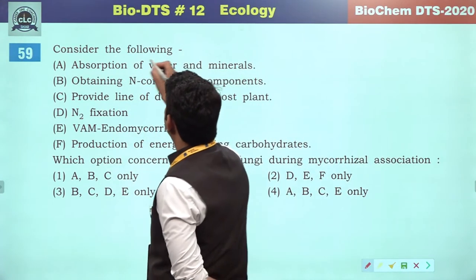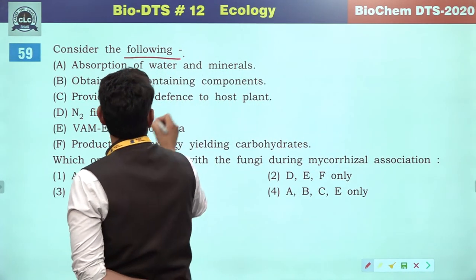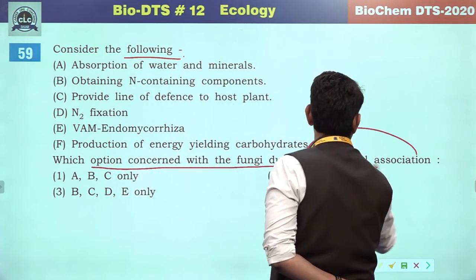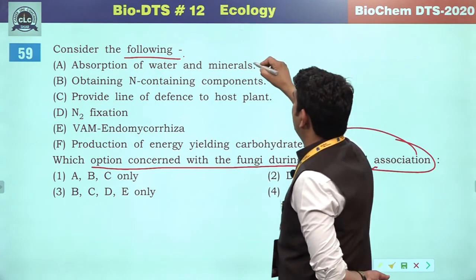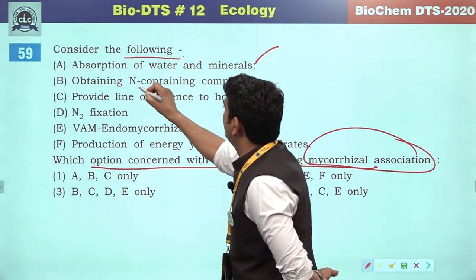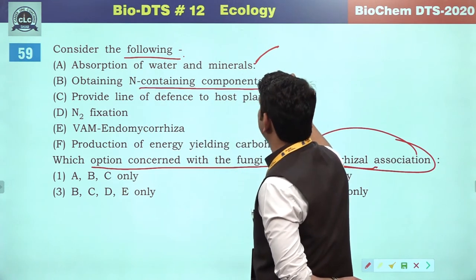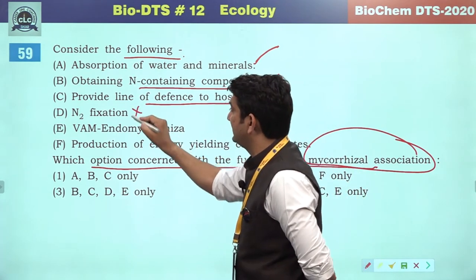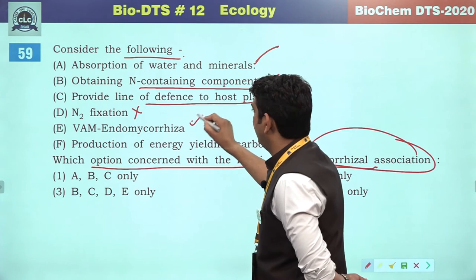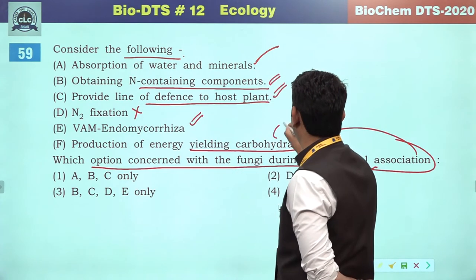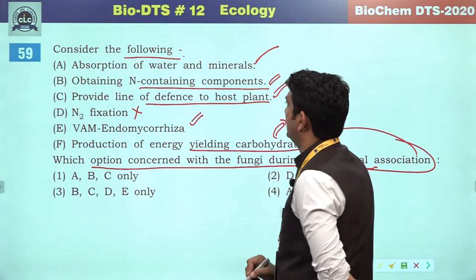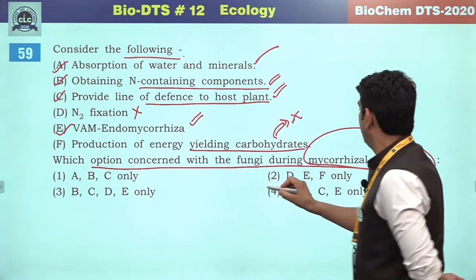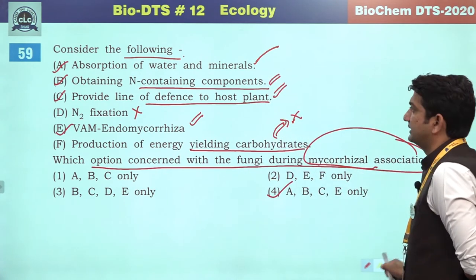Question — which option is concerned with the fungi during mycorrhizal association? In mycorrhizal association, fungi absorb water and minerals, obtain nitrogen-containing compounds from algae, provide the first line of defense, fix atmospheric nitrogen — no, fungi don't do that. Energy-yielding carbohydrate production activities are not done. So A, B, C and E will be the correct references — the fourth will be the correct answer.